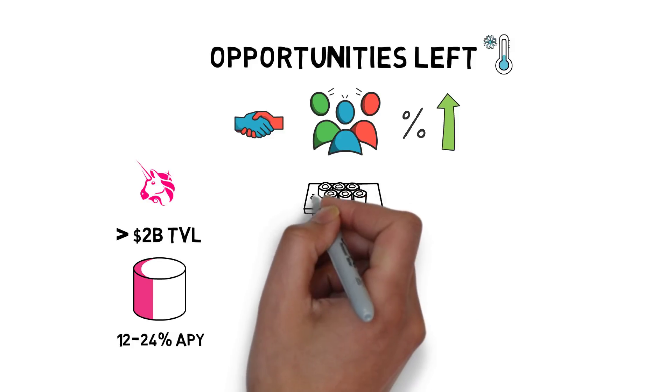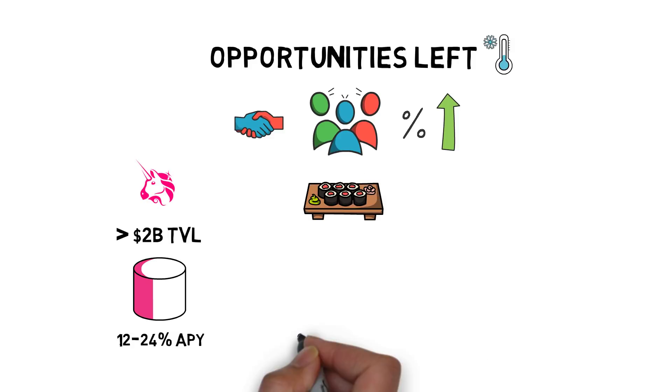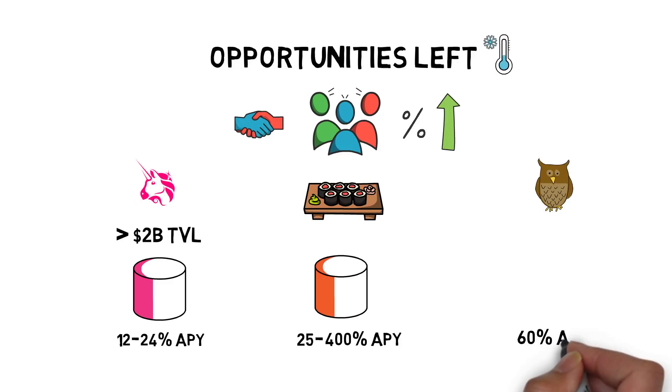Sushiswap still offers between 25% and as high as 400% APY depending on the pool. Index Coop is another interesting example with 60% on ETH DPI Uniswap LP tokens. DPI is a DeFi Pulse Index that represents 11 top DeFi tokens, so if you're bullish on both ETH and DeFi, this could be a good option for you.